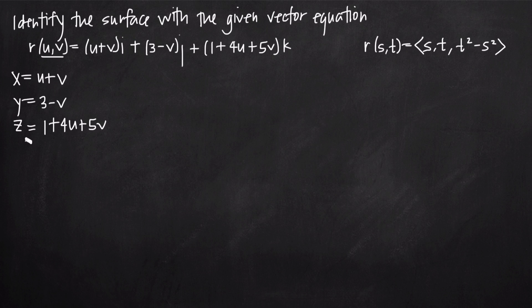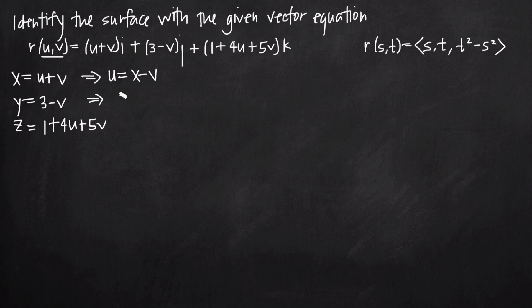We want to get an equation for z in terms of x and y only. Solving the first equation x equals u plus v for u — since u only appears in the x equation and not in the y equation — we subtract v from both sides to get u equals x minus v. Then using our equation for y to find v: we add v to both sides to get v plus y equals 3, then subtract y to get v equals 3 minus y.